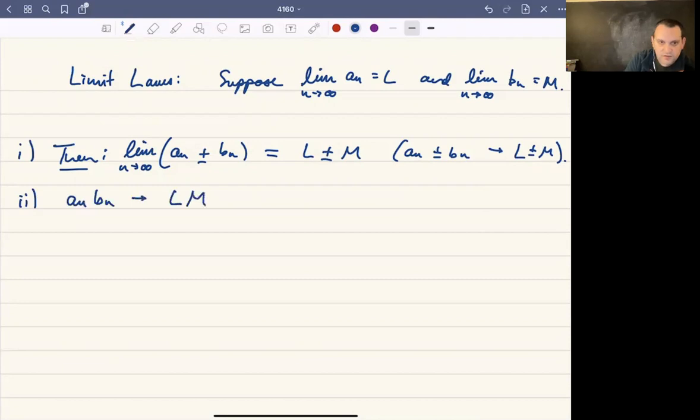The next rule is that the product of the sequences converges to the product of the limits. The ratio of the sequences converges to the ratio of the limits, assuming we're not dividing by zero, so as long as M is not equal to zero and b_n is not equal to zero for all n.